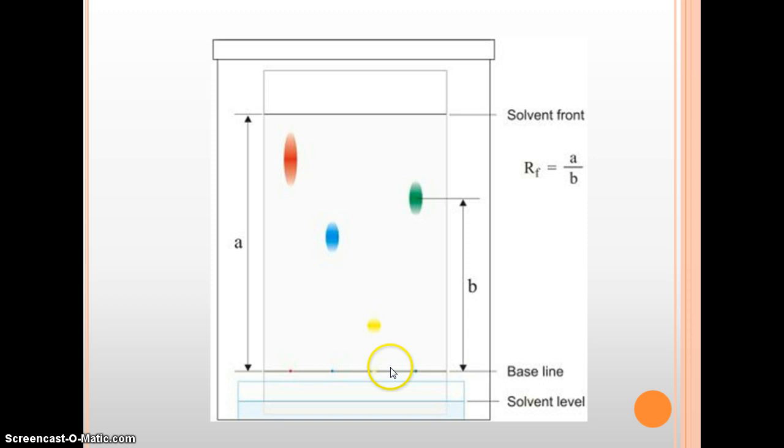So the solvent is going to adhere to your stationary phase. In this case it's paper, and on your baseline you're going to have your mixture. So you would put a small dot of each mixture on this baseline, and then as the solvent moves up the stationary phase, now the solvent would be the mobile phase. As the solvent moves up the stationary phase or the paper, it's going to grab these mixtures.